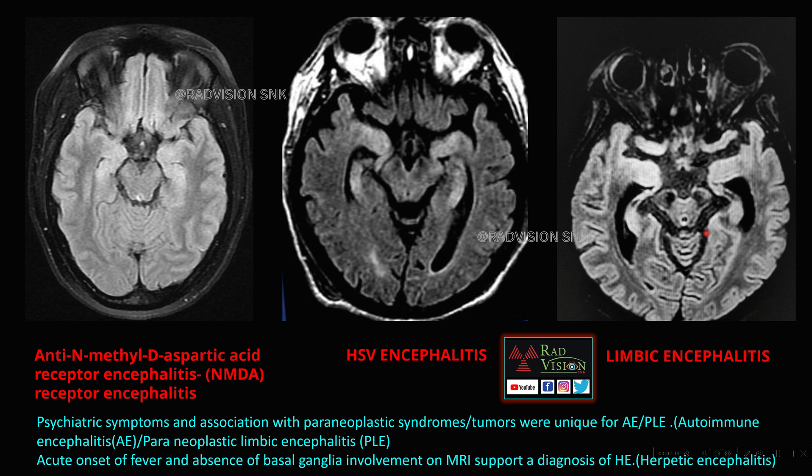To differentiate: psychiatric symptoms and association with paraneoplastic syndromes and tumors are unique to autoimmune or paraneoplastic limbic encephalitis, whereas acute onset of fever and absence of basal ganglia involvement on MRI support the diagnosis of herpes simplex encephalitis. These form the top differential diagnoses for anti-NMDA receptor encephalitis.